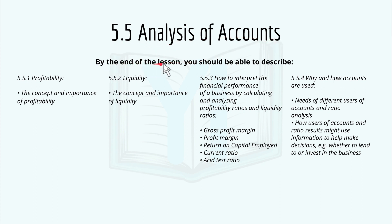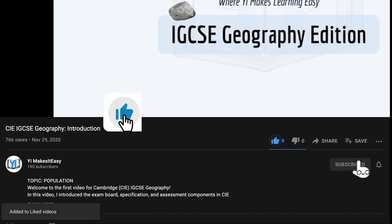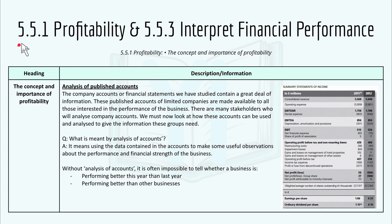By the end of the lesson, you should be able to describe 5.5.1 Profitability, 5.5.2 Liquidity, 5.5.3 How to interpret the financial performance of a business by calculating and analyzing profitability ratios and liquidity ratios, and 5.5.4 Why and how accounts are used. We'll move on to the first one which is 5.5.1 Profitability and 5.5.3 Integrated Financial Performance. The specification 5.5.3 is throughout the video so just take note of that.